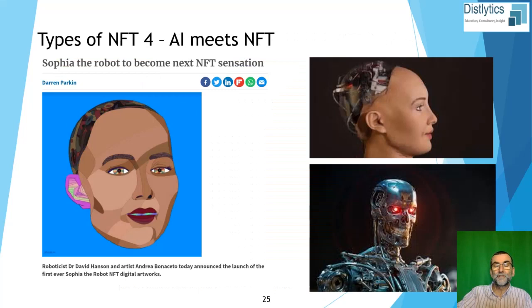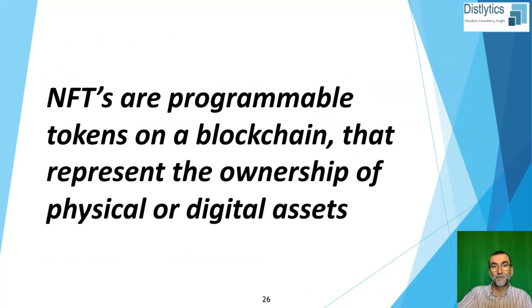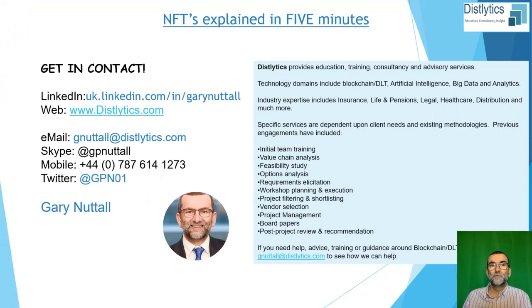Finally, the fourth type of NFT is an NFT that is created from an NFT. This is still early days, but we're seeing it extending into the realms of artificial intelligence, so it's likely to be a topic for the future. To summarise, NFTs are programmable tokens on a blockchain that represent the ownership of a physical or digital asset. I hope you've found that of interest — don't forget to subscribe if you're on YouTube, click the like or reminder button, or feel free to get in touch with me directly.